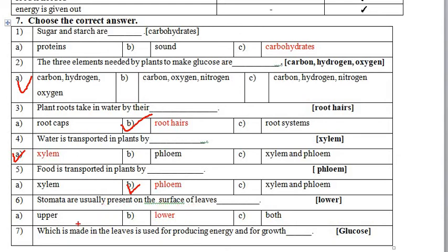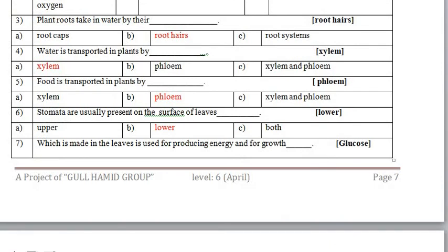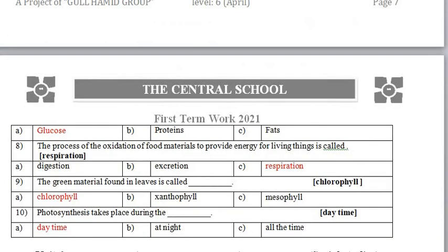Next: 'Food is transported in the plant body by __.' Phloem is responsible for the transportation of food, so the correct option is phloem. Next: 'Stomata are usually present on which surface of the leaf?' The stomata are present on the lower surface of the leaves. Next: 'The substance made in the leaf is used for producing energy and for growth.' The correct option is glucose.